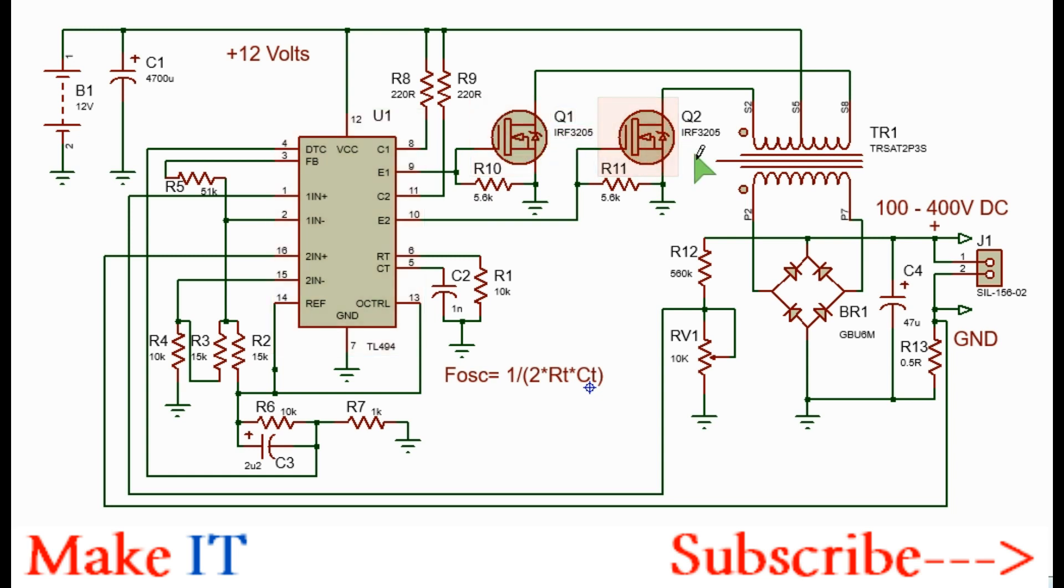The two MOSFETs shown are IRF3205. They can handle 90 amperes without a problem and they are rated at 55 volts drain to source. When the first BJT is turned on, this MOSFET will conduct because VCC will appear at the emitter here. There will be about 10 volts at the gate of this MOSFET and so it will completely turn on. This will allow current to flow through the positive 12 volts rail and through this one half winding through the MOSFET into ground.